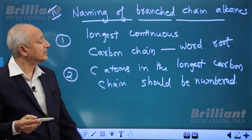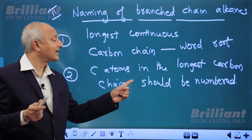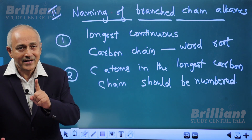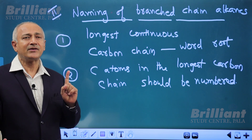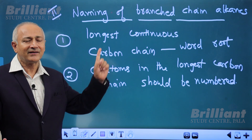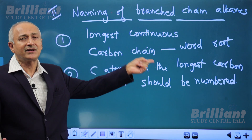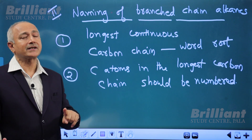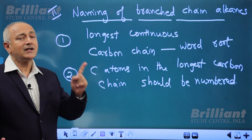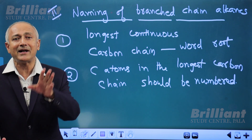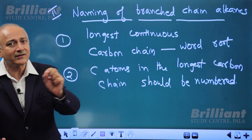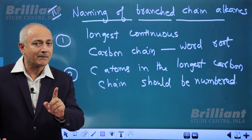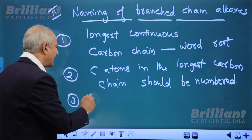The carbon atoms in the longest carbon chain should be numbered 1, 2, 3, and so on. While numbering the carbon atoms in the longest carbon chain of the branched alkane, the numbering must be done in such a manner that the substituents on the carbon chain get the minimum number possible.